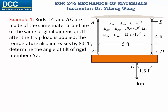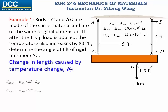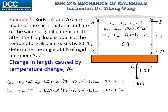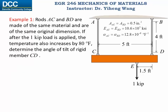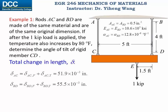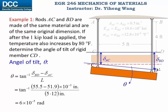The second contribution to deformation is the change in length of the rods caused by temperature change, calculated by the equation delta T = alpha · ΔT · L. We know the linear coefficient of thermal stress alpha, the length, and the temperature change delta T is 80 degrees Fahrenheit. Substituting these values, we calculate the deformation due to temperature change. Therefore, for each rod the total deformation is simply the sum of the two contributions — from force and from temperature change. With this information we find the angle of tilt theta to be 6 × 10⁻⁵ radians, which can also be converted into degrees.